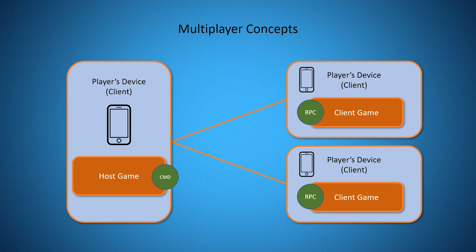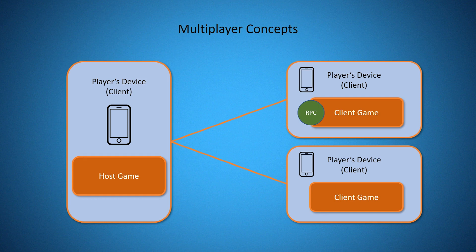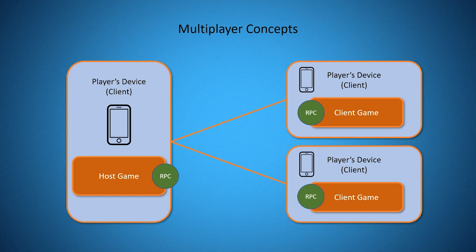Within the Photon plugin, there's actually no CMD function. Instead, their RPC function works slightly differently. With the Photon plugin, you can call an RPC function on any device connected to your game, and then you can specify who you want the message to be sent to. You can say you want it sent only to the master client, or the host, or you can tell it to send to all other players, or to all players including yourself. So if you wanted to send a message from one client to all other players, by calling one single RPC function, you can broadcast that message to all other players — without having to first send it from one client to the host, and then from the host to all the other clients.